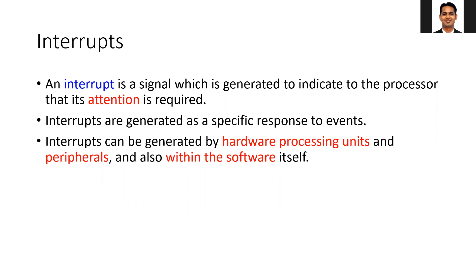Interrupts can be generated by different units in the SoC. You have hardware processing units — different accelerators inside the FPGA — those can be used to generate an interrupt. Your DMA can generate an interrupt; for example, it can generate one when it completes the memory transfer to the FFT, as well as when it receives data from the FFT. Your peripherals can also generate interrupts — for example, when Ethernet receives a packet of data, it can interrupt the processor to indicate a new packet has arrived. Within the processing system, different units can also generate interrupts.